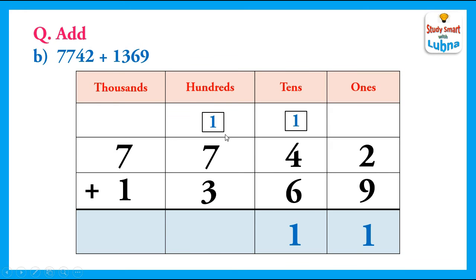After this we will add the hundreds. 1 plus 7 equals 8, and 8 plus 3 equals 11. Again we will regroup the hundreds. We write 1 in the hundreds column and carry 1 to the thousands column. In the thousands column we have 1 plus 7 plus 1, that is equal to 9. So after adding 7742 and 1369 we have got 9111.